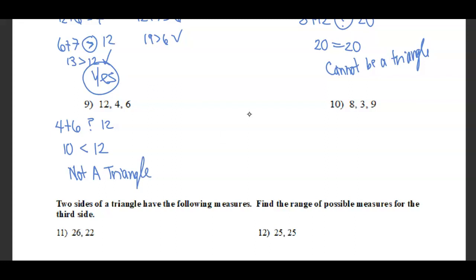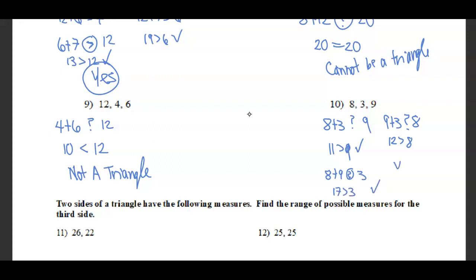For 8, 3, and 9: 8 plus 3 equals 11, which is greater than 9. Then 9 plus 3 equals 12, which is greater than 8. And 8 plus 9 equals 17, which is greater than 3. All combinations work, so yes, this is a triangle.